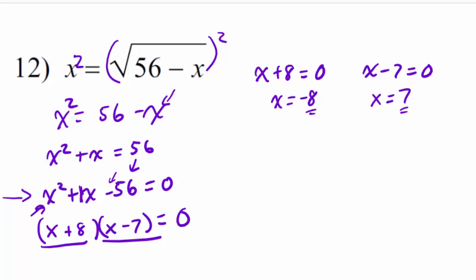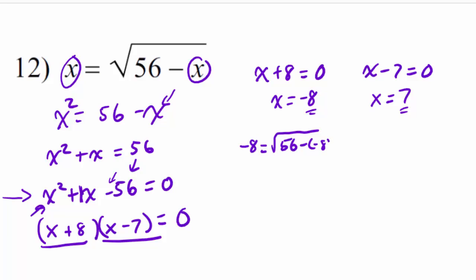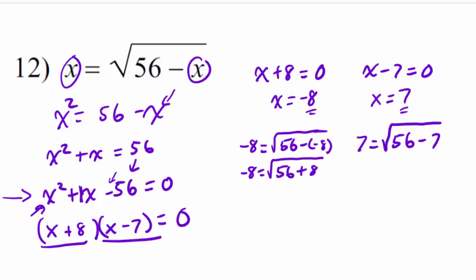We substitute negative 8 in: negative 8 equals the square root of 56 minus (negative 8). Inside the radical, 56 plus 8 is 64, and the square root of 64 is 8. Since we only take the principal root, we get 8, and 8 does not equal negative 8. Therefore, negative 8 is an extraneous solution — it doesn't work in the original problem, so we discard it.